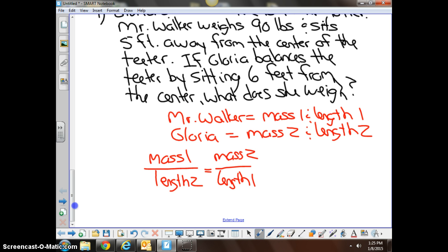So if we know Mr. Walker is mass one, we can fill in the information for him by starting with 90 for mass one. We're not going to deal with length two yet, because we're not quite sure if we know it or not. We're not going to deal with mass two yet, because we don't quite know what we're talking about yet, or we haven't got that far in the problem. And then we know Mr. Walker is five feet away from the center. So let's put five down here. The one thing we do know about Gloria is that her length from the center would be six feet, and we are trying to figure out what her mass is, which would be our variable.